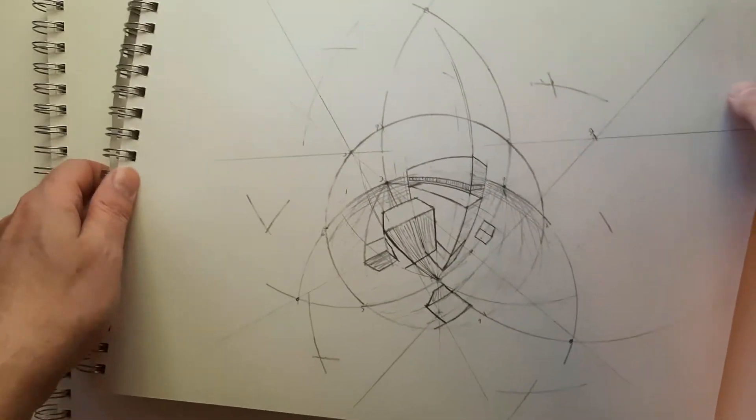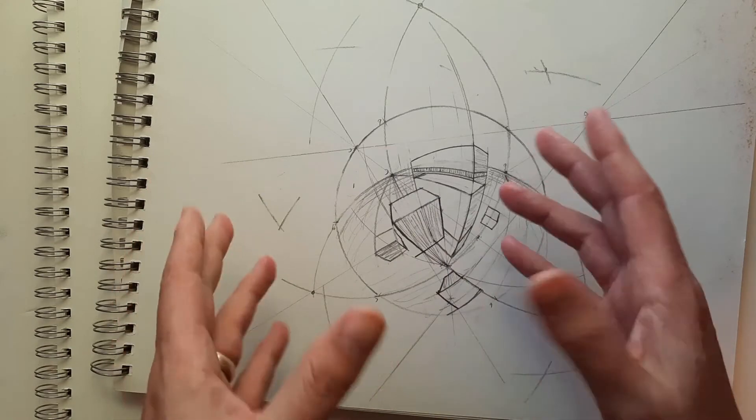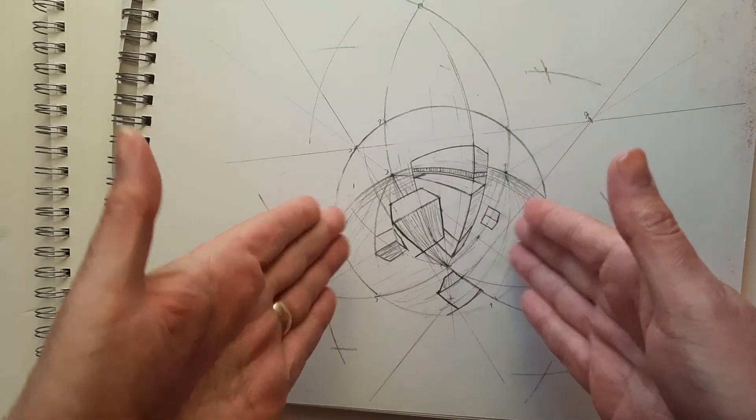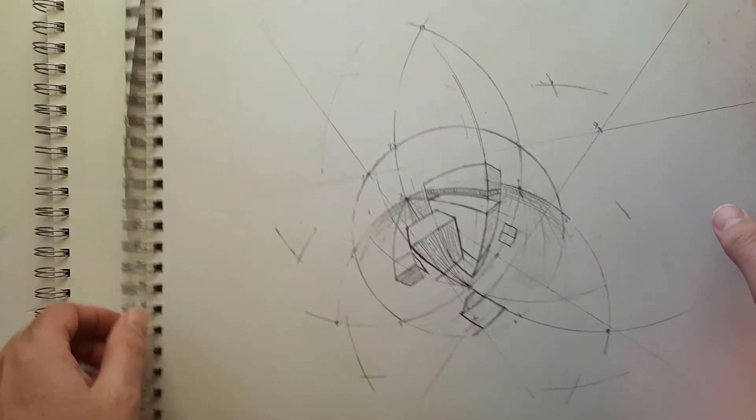Now in six-point perspective, we are no longer looking flat on. We're looking a little down, a little to the side - anything we want.